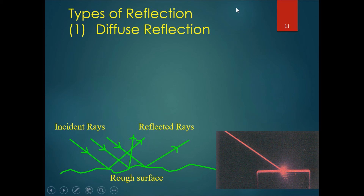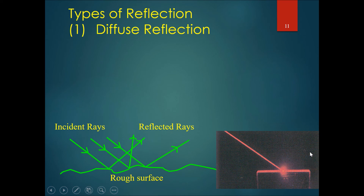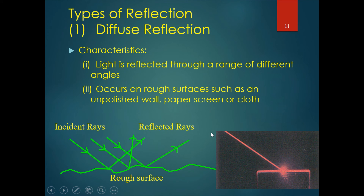The second kind is called diffuse reflection. This occurs when light comes in parallel but the surface is slightly rough, so the reflected rays are not parallel. If a laser pointer shines on such a surface, it would not reflect as a neat beam but instead as a diffuse ray of light. The characteristic is that light is reflected through a range of different angles, occurring on all rough surfaces such as walls, paper, or cloth.